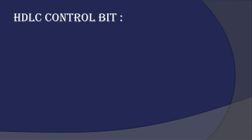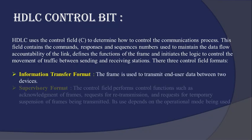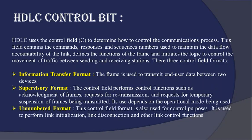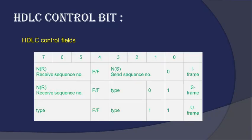Next, we see about the HDLC control bit. HDLC uses the control field to determine how to control the communication process. It contains commands, responses, and sequence numbers, which are used to maintain data flow and accountability of the link. There are three control field formats: information transfer format, supervisory format, and unnumbered format. There are two types of control fields: 16-bit and 8-bit. In the I-Frame, the first bit is 0. In the S-Frame, the first two bits are 1 and 0. And in the U-Frame, the first two bits are 1 and 1.